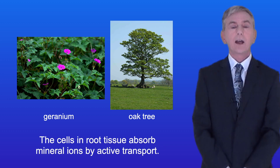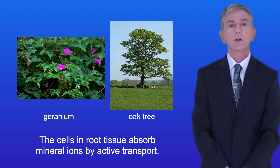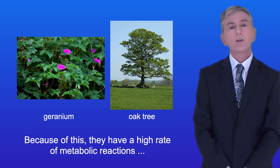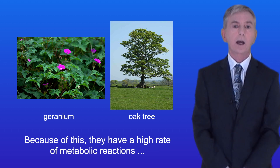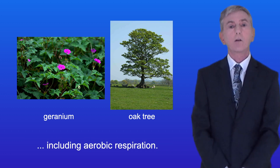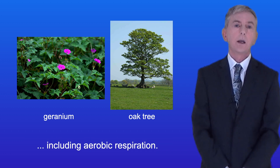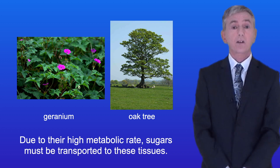Now the cells in root tissue absorb mineral ions by active transport and because of this they have a high rate of metabolic reactions including aerobic respiration. So due to the high metabolic rate sugars must be transported to these tissues.